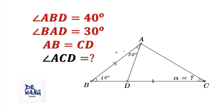Let's look at this graph. If this angle is 30 degrees and this angle is 40 degrees, and AB equals CD, what is the angle of alpha? We are going to use two different methods to solve this question.